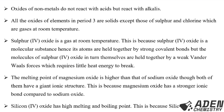Next, we see the melting point of magnesium oxide is higher than that of sodium oxide, though both of them have a giant ionic structure. The reason why magnesium oxide has a higher melting point compared to sodium oxide is because magnesium oxide has a stronger ionic bond compared to sodium oxide. Both have a giant ionic structure, but the ionic bond in magnesium oxide is stronger than the ionic bond in sodium oxide.